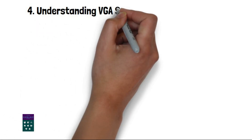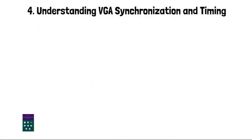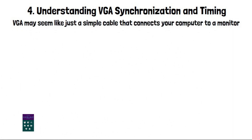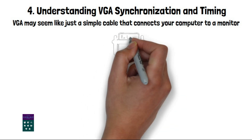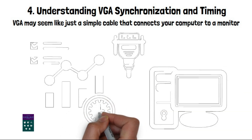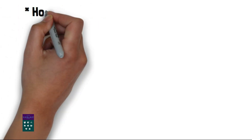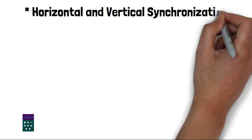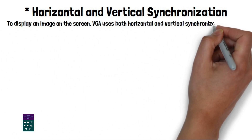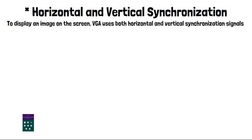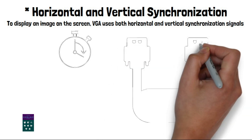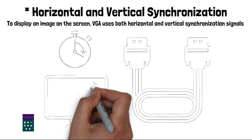Understanding VGA synchronization and timing. VGA may seem like just a simple cable that connects your computer to a monitor, but there's actually some synchronization and timing magic happening behind the scenes to make those pixels come to life. To display an image on the screen, VGA uses both horizontal and vertical synchronization signals. These signals tell the monitor when to start a new line — horizontal sync — and when to start a new frame — vertical sync. By carefully coordinating these signals, VGA ensures that each pixel is displayed in the correct position on the screen.